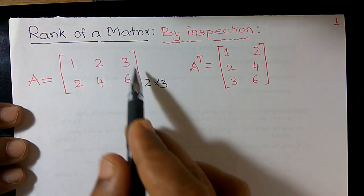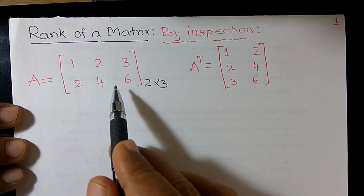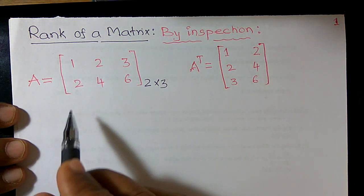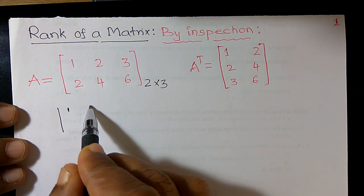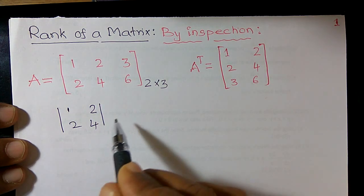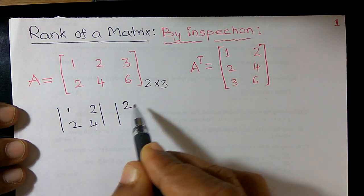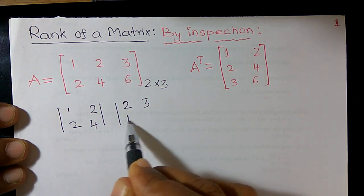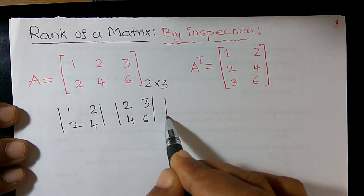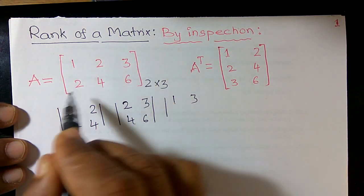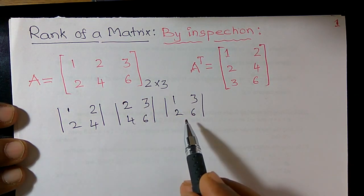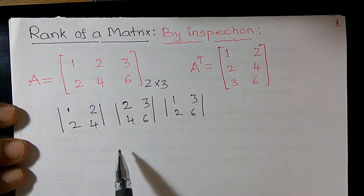Now, how do we find out the rank of this matrix quickly and easily? I want to find out minors of this matrix. One minor is 1, 2, 2, 4. Another minor is 2, 3, 4, 6. Or we can leave the middle column: 1, 3, 2, 6. So these are the three possible minors of this matrix.